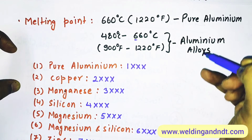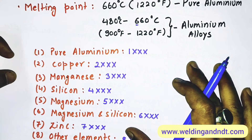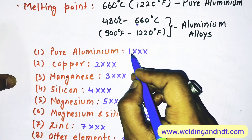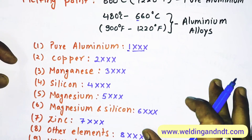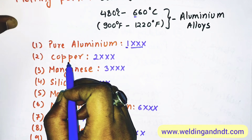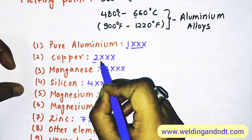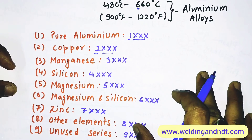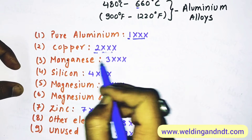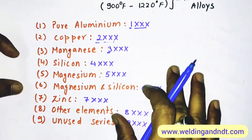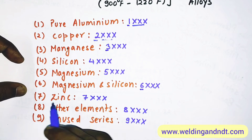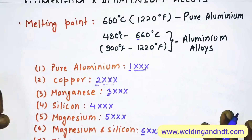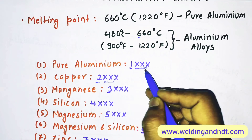Now, the naming system for aluminum metals: if the aluminum contains pure aluminum, its name starts with 1 followed by three digits. If the alloying element is copper, the series starts with 2 followed by three digits. The series continues: 3 for manganese, 4 for silicon, 5 for magnesium, 6 for magnesium and silicon, 7 for zinc, 8 for other elements, and 9 is unused.